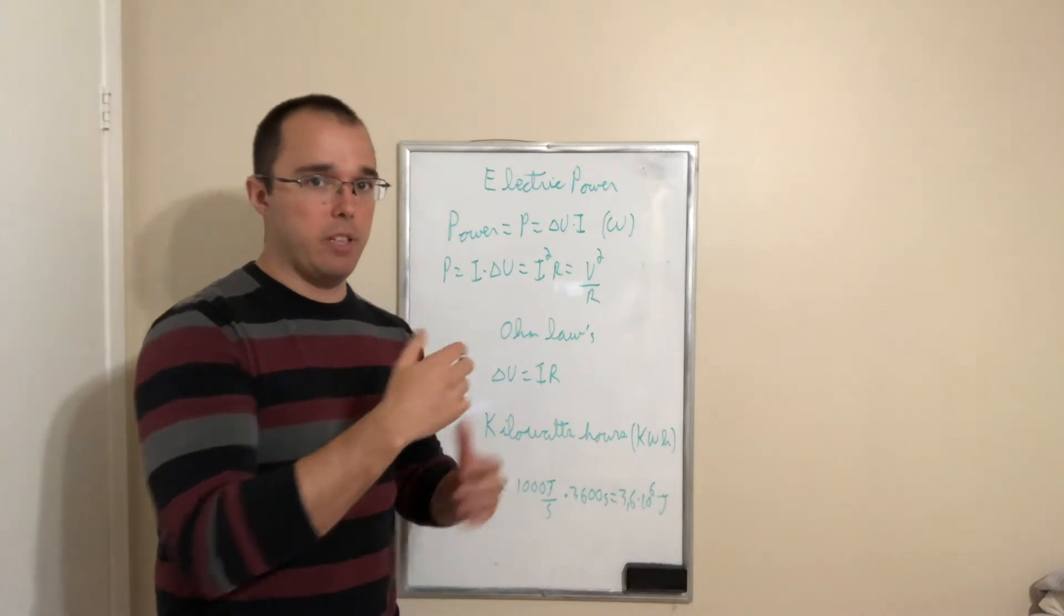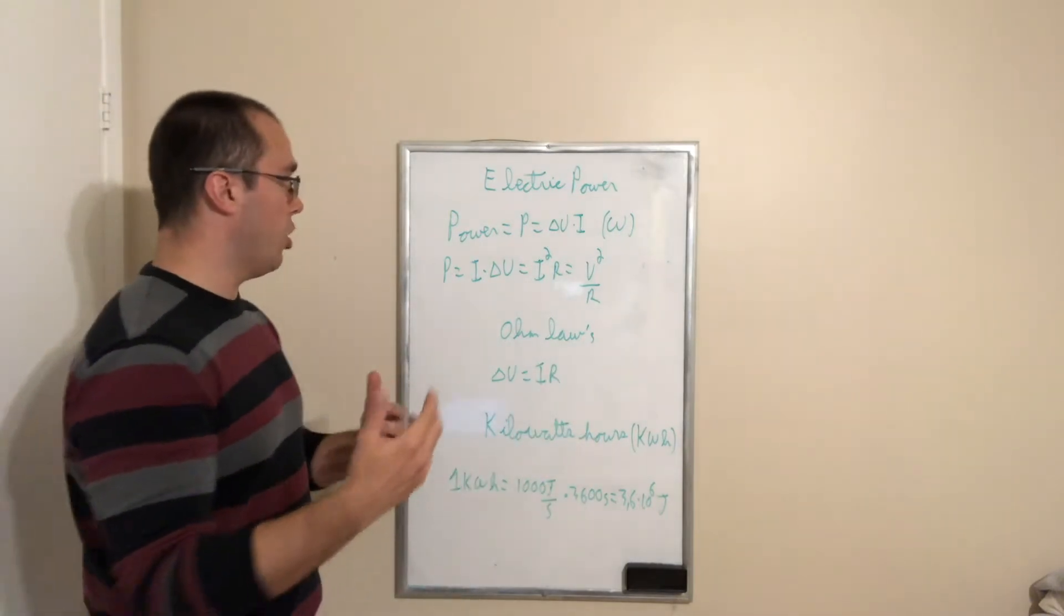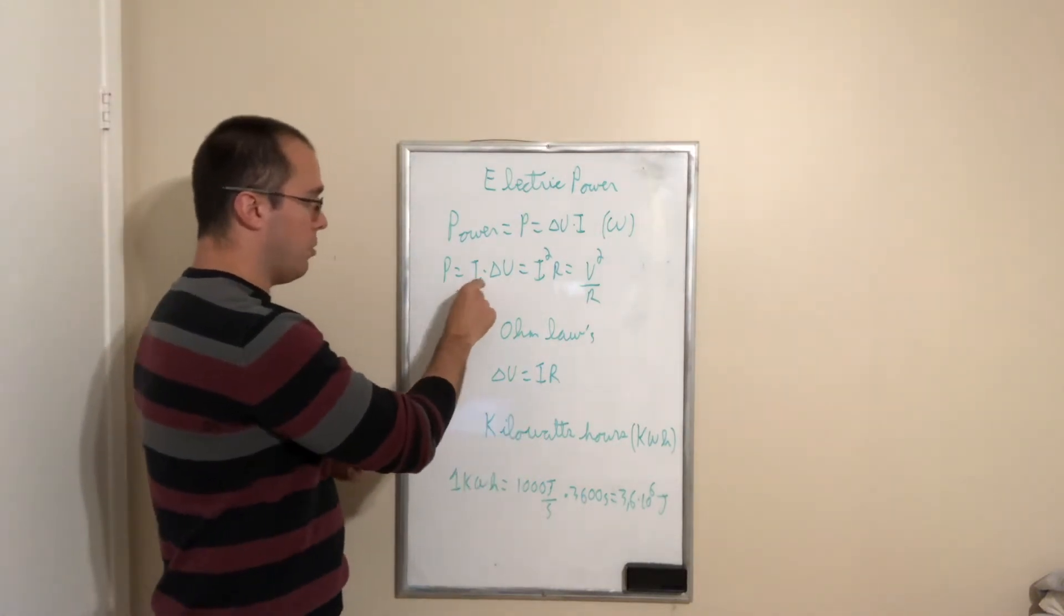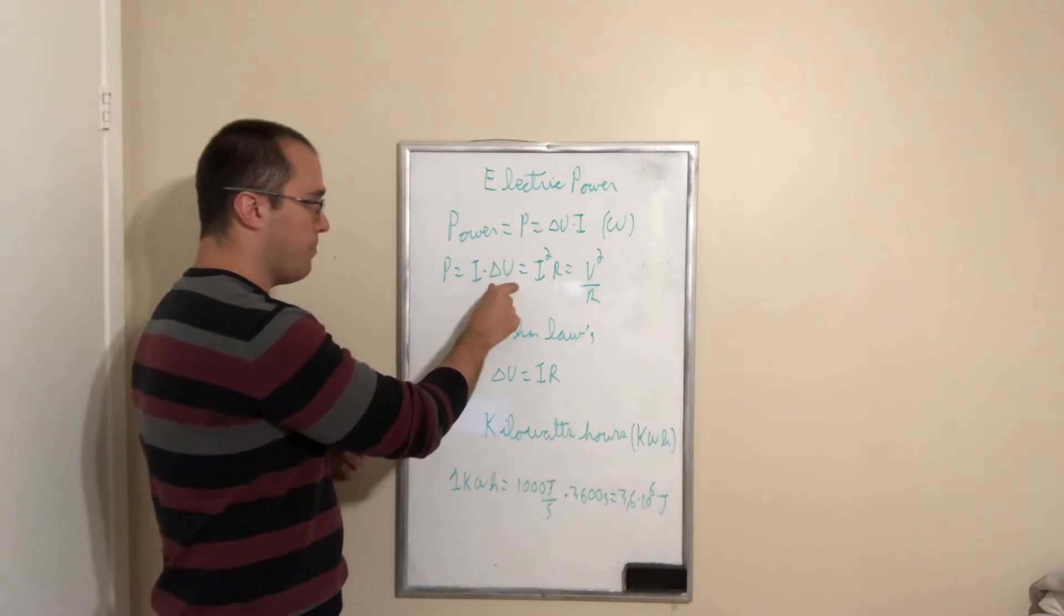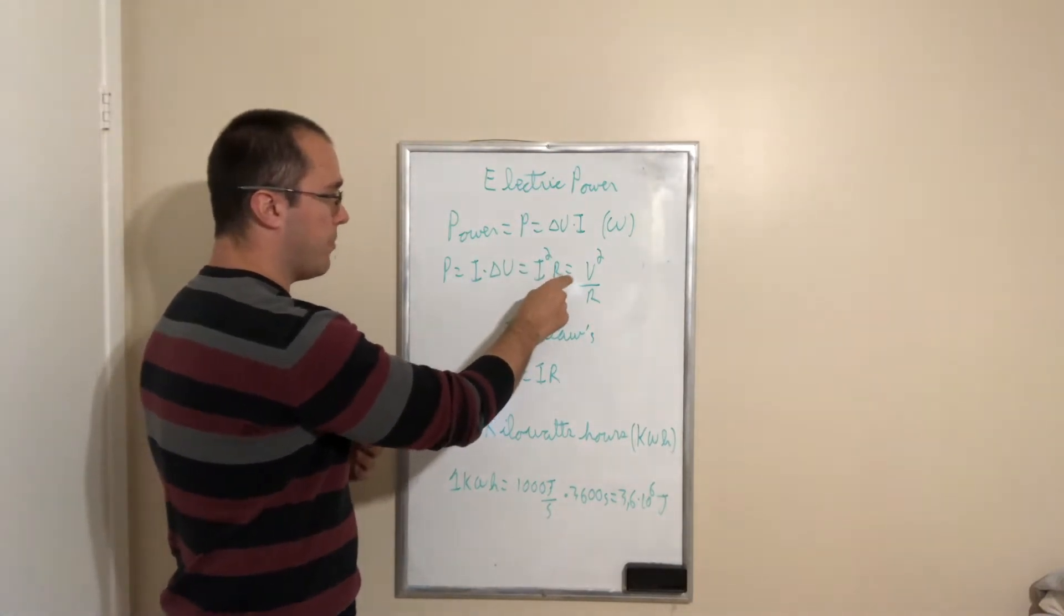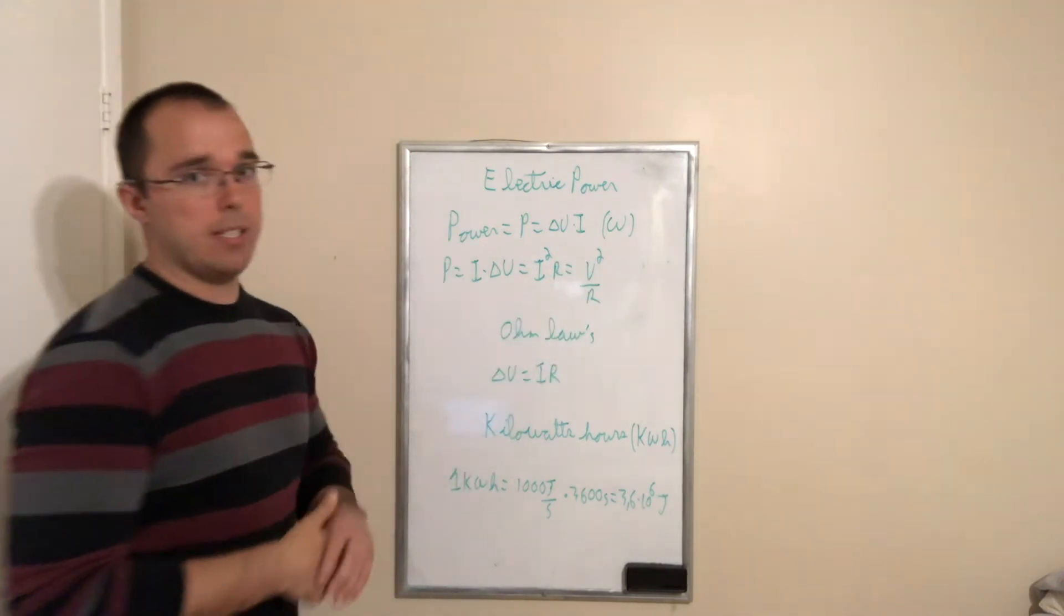Now we're going to see right after the definition for power, Ohm's law, and because of Ohm's law, there's many other ways to define mathematically the power. So initially power is equal to current multiplied by drop in voltage. It's also equal to the current square multiplied by the resistance. It's also equal to the voltage square divided by the resistance.